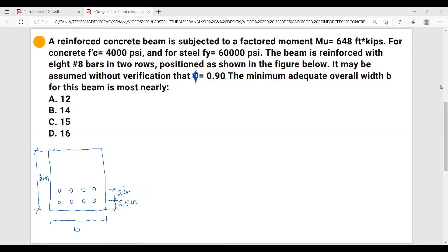A reinforced concrete beam is subjected to a factored moment Mu equals 648 ft·kips. For concrete fc' equals 4000 psi, and for steel fy equals 60,000 psi. The beam is reinforced with eight #8 bars in two rows, positioned as shown in the figure below. It may be assumed without verification that φ = 0.90. The minimum adequate overall width b for this beam is most nearly...